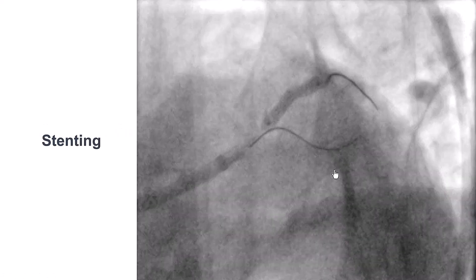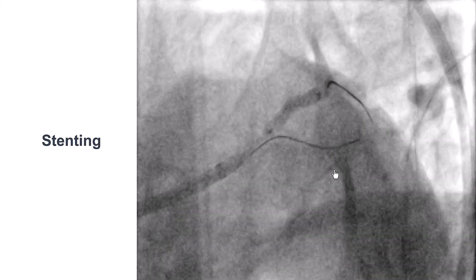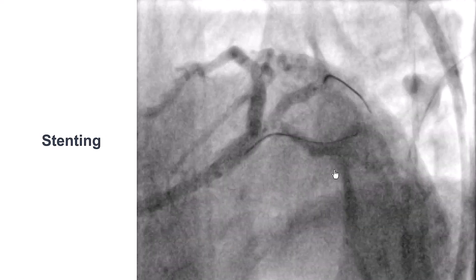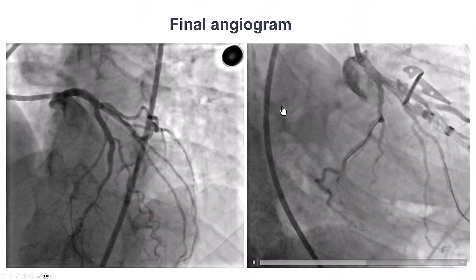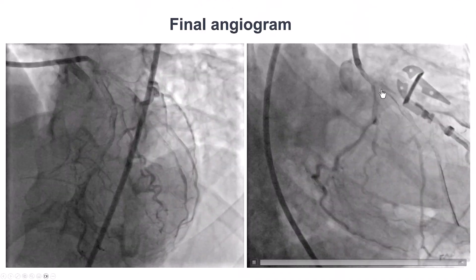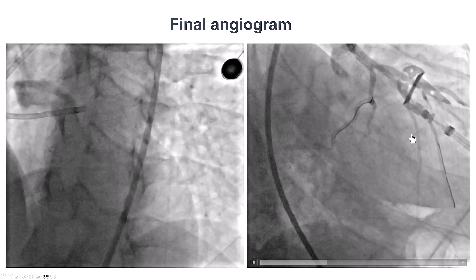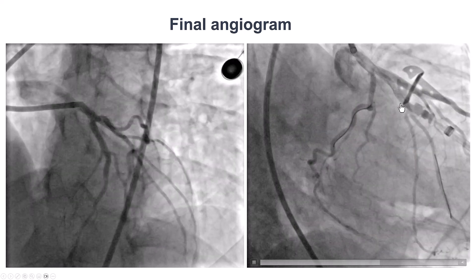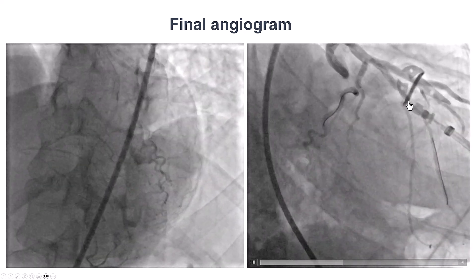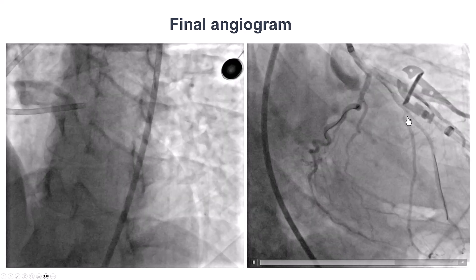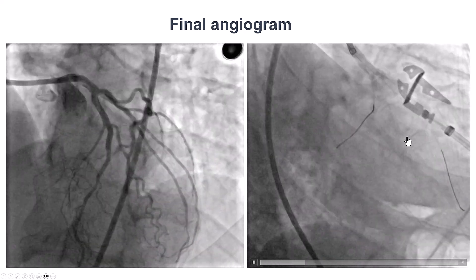After that, we predilated, placed a stent just to the origin of the Ramos branch, and that provided a nice result. We have TIMI 3 flow in this branch, and importantly, we did not have any compromise of any of the two major branches of this Ramos.